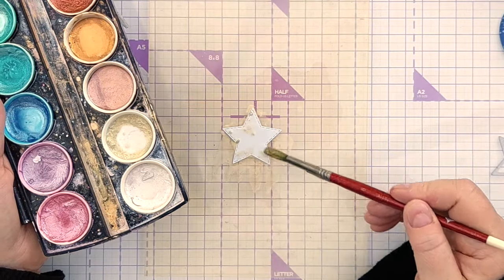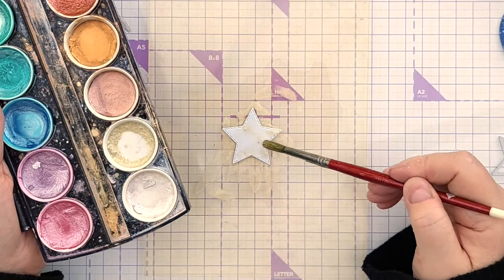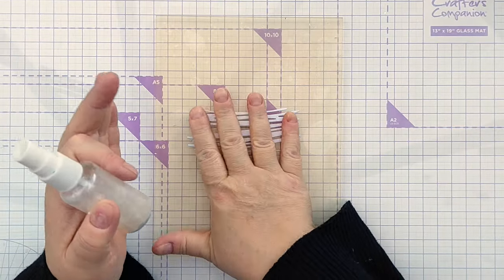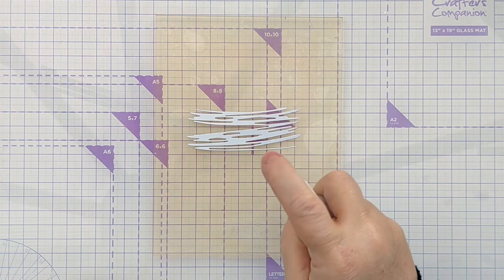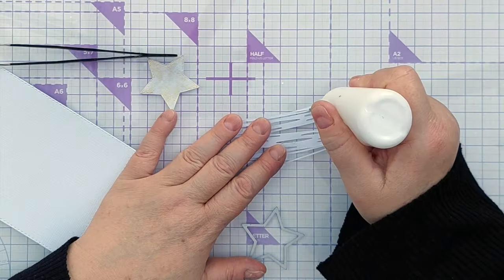Next I painted on some very pale gold metallic paint onto my star and set that aside to dry and finally I took the scribble die cut and spritzed on some of the white shimmer spray so it's still white but it is shimmery now.